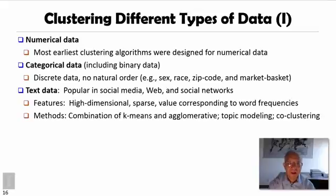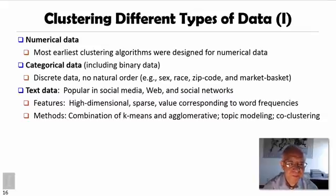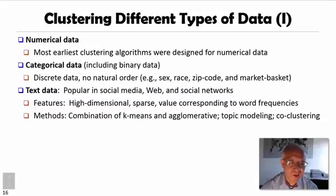The third kind of data is text data, which is very popular on the web, in social media, and social networks. If we consider each word as one dimension, we are handling very high-dimensional data, but it is very sparse — values usually correspond to word frequencies. Methods to handle such data include a combination of k-means and agglomerative methods, topic modeling methods, or co-clustering methods.